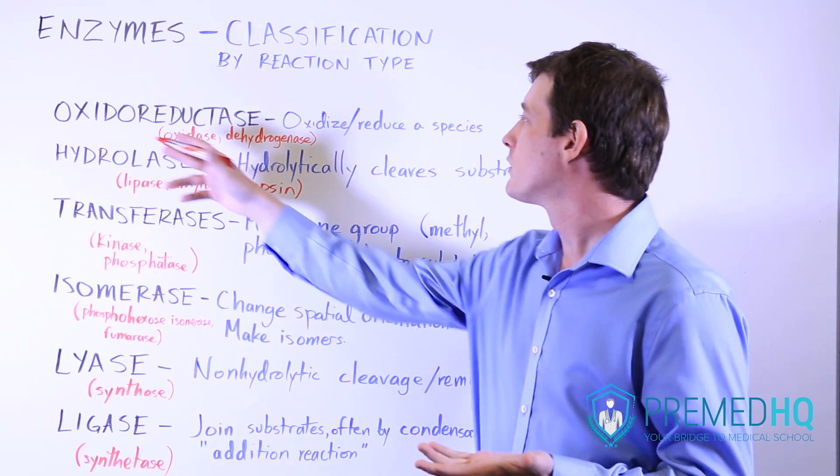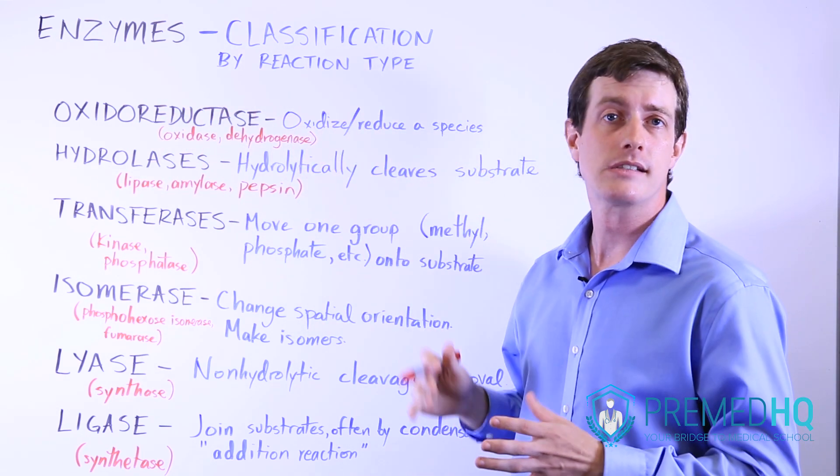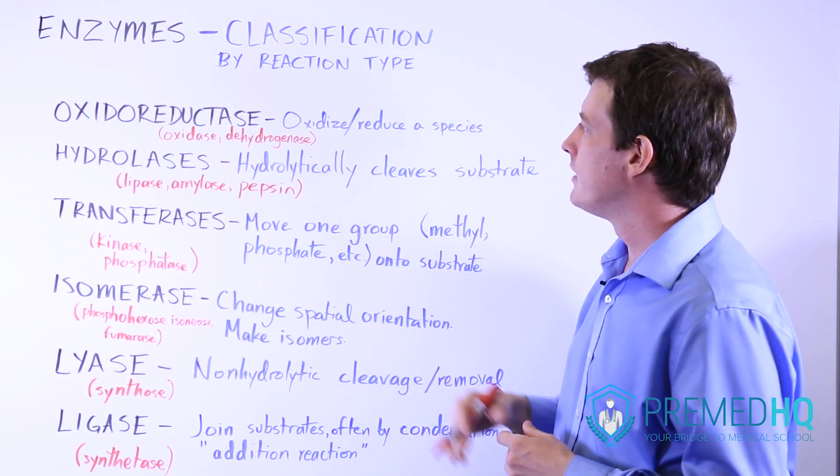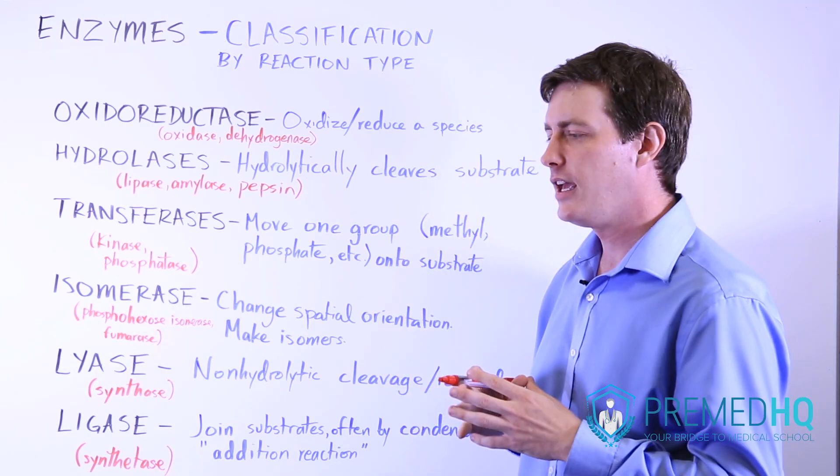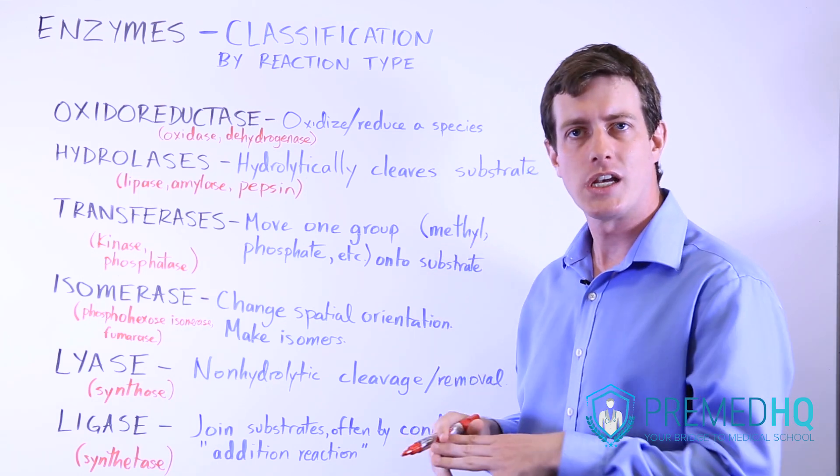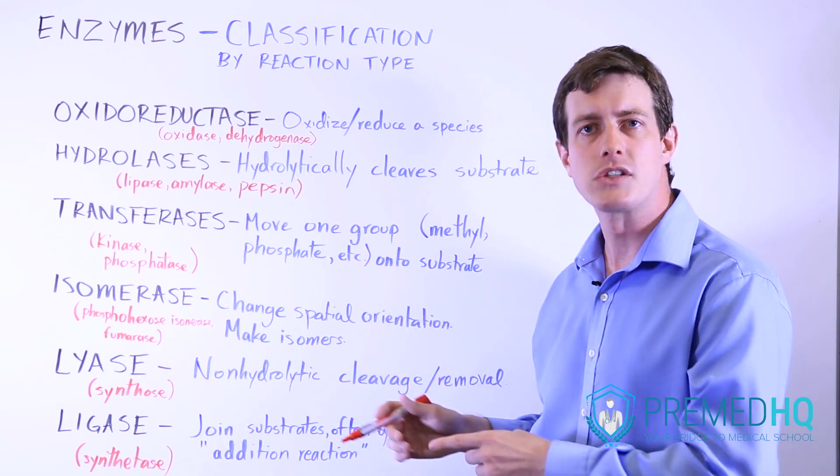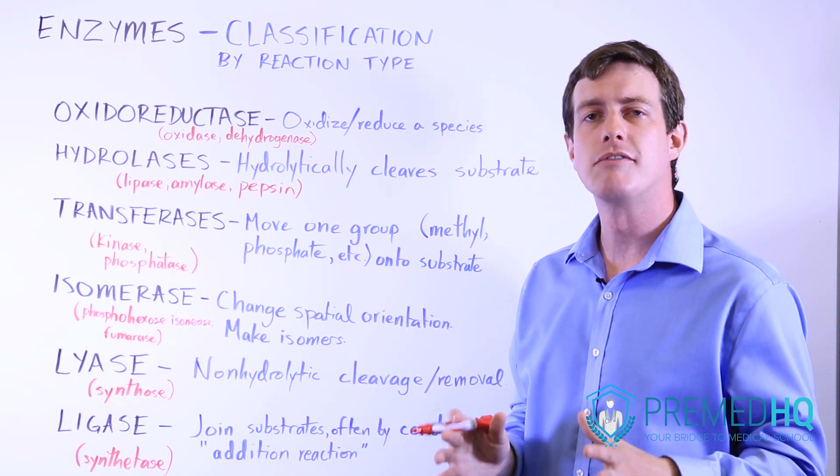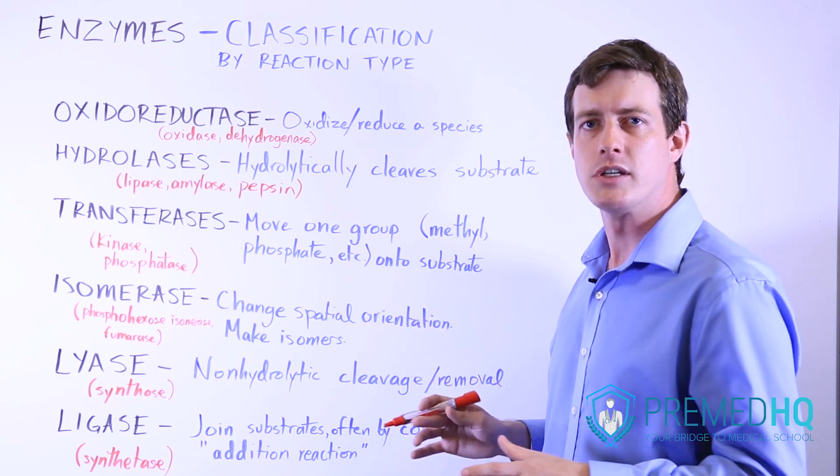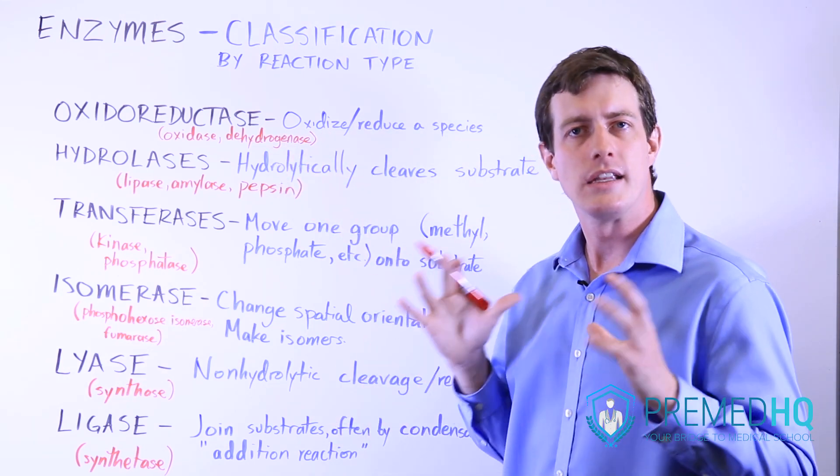First we'll go through oxidoreductases. As the name implies, they oxidize or reduce species. That usually means they involve proton exchange or perhaps oxygen exchange. Sometimes it involves transferring electrons from one place to another. Remember, there are several different definitions of oxidation and reduction, and a lot of these enzymes can use that in different ways.